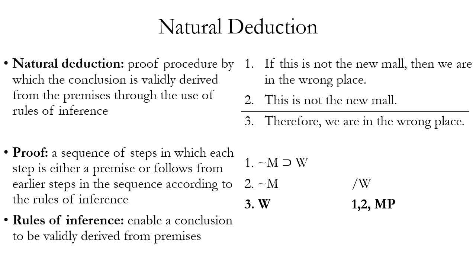Natural deduction is a proof procedure that allows us to validly derive a conclusion from premises using rules of inference. It differs in method from proof of validity or invalidity via truth table. The advantage of the truth table is that it allows us to calculate formally whether an argument is valid or invalid — we can just follow the rules for constructing the truth table and it will give us an answer.